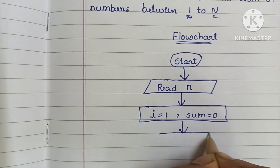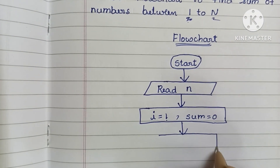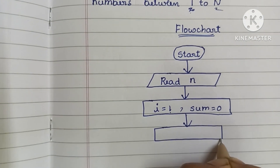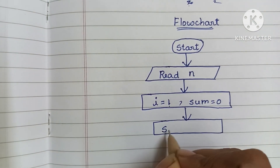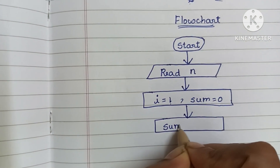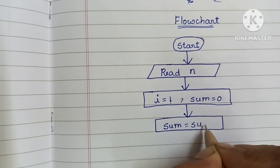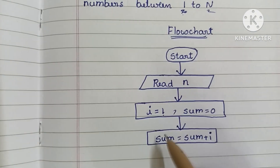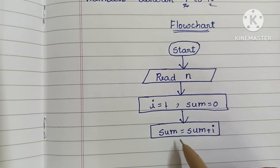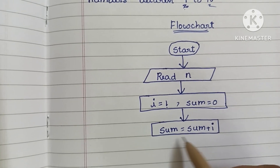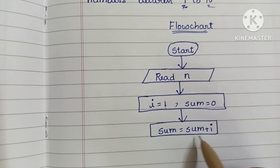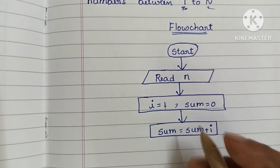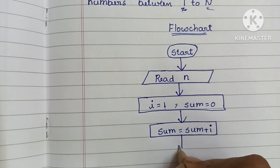Next we have to do the calculation, which is within a rectangular shape. We write sum is equal to sum plus i. Here we are adding the odd number to the sum. Sum = sum + i, where i is the odd number.